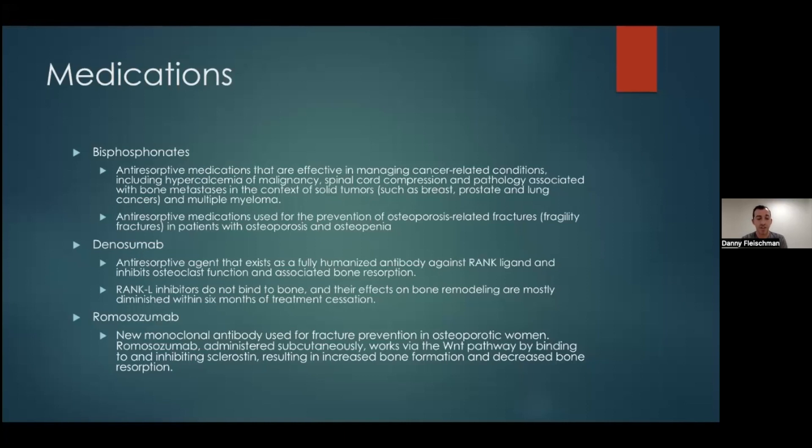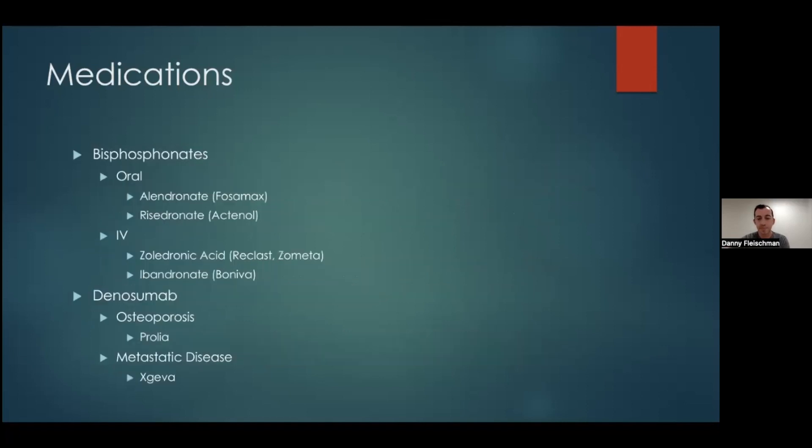There are other medications that are not as common, but newer ones like romosumab, which is a monoclonal antibody used for fracture prevention in osteoporotic women. It's administered subcutaneously, and it works via a different pathway, the Wnt pathway, by binding to and inhibiting sclerostin, resulting in increased bone formation and decreased bone resorption.